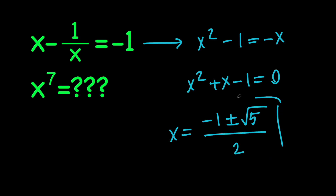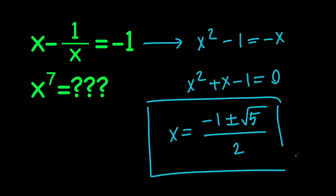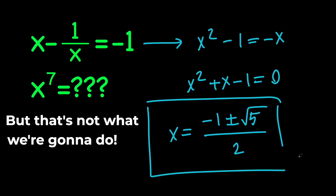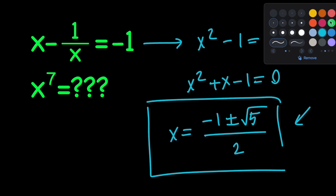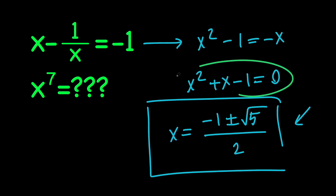Next, we can go ahead and raise both sides to the power of 7 and get x to the power of 7, but that's not what we're going to do. We're going to try to find x to the power of 7 in terms of x to the power of 1, and then from there, by using this value, we can evaluate x to the power of 7. So, let's go ahead and use this equation to isolate x squared.